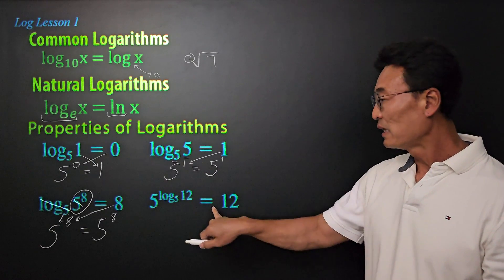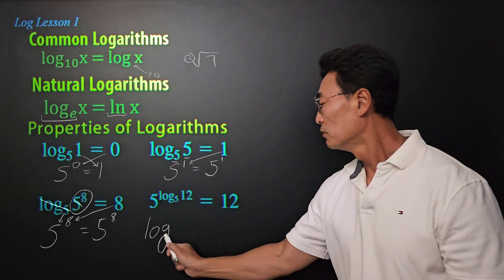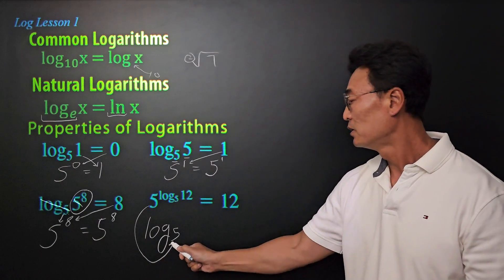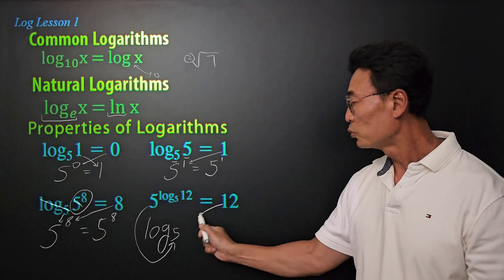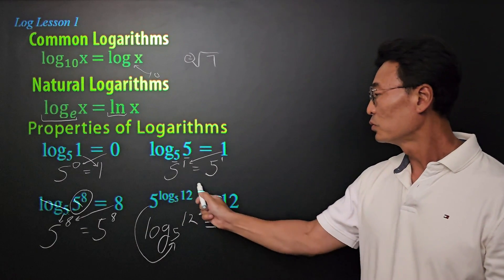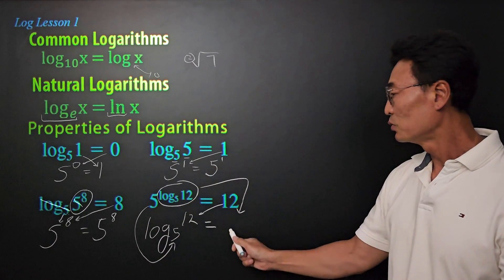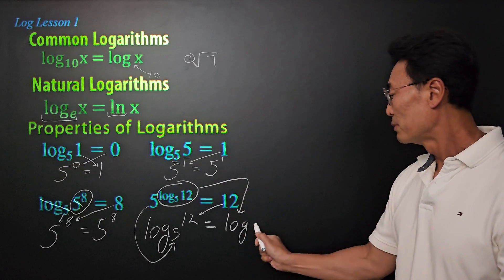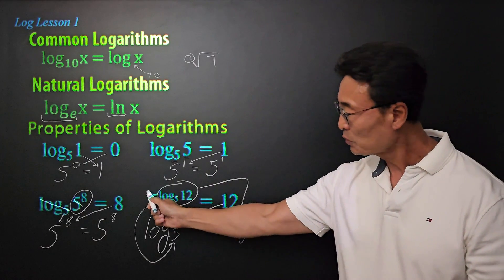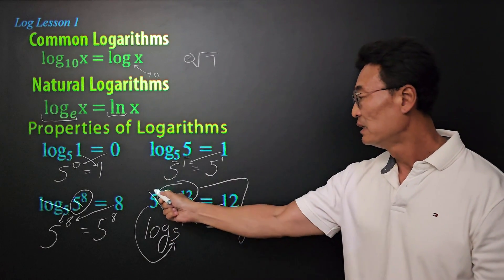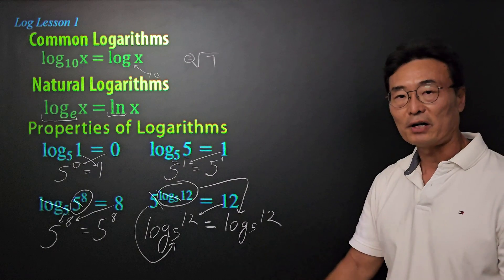Last, we have 5 to the power of log base 5 of 12 equals 12. If we rewrite this as a log equation: the base 5 comes here, and the argument 12 will equal the exponent, which is log base 5 of 12. For that reason, we can cross out the 5 and the log base 5 — whatever the argument is will be our answer.